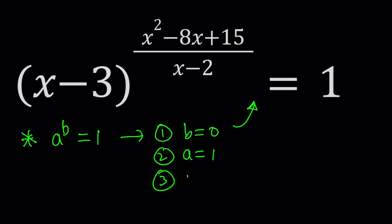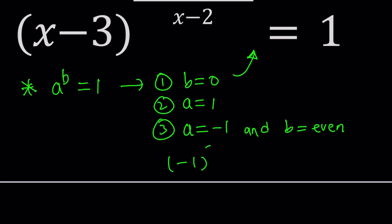And the third case is where a is negative 1 and b is even. So when these two conditions are satisfied, something like negative 1 to the power 2 or 2n, if n is an integer, then this will always be 1.